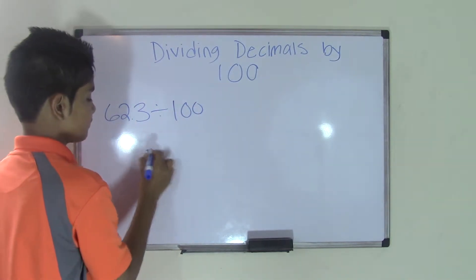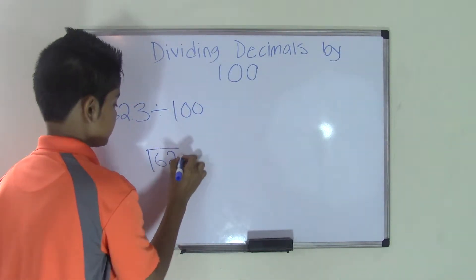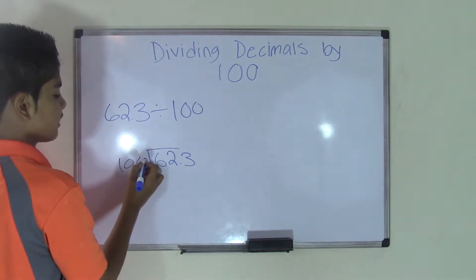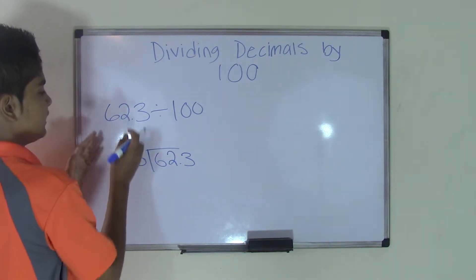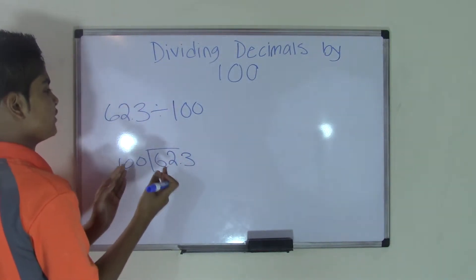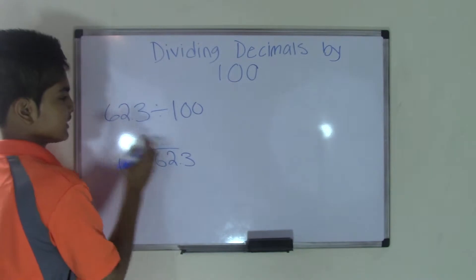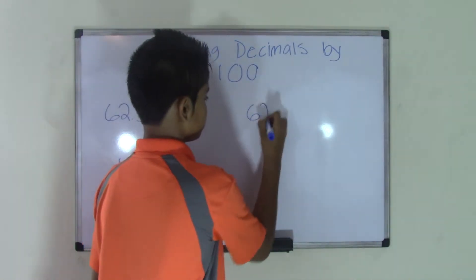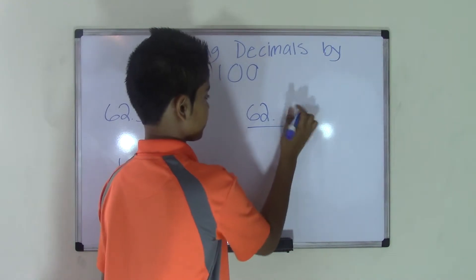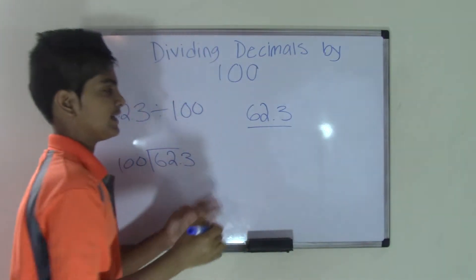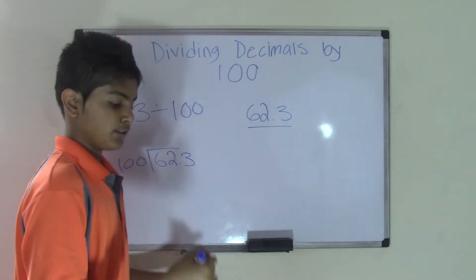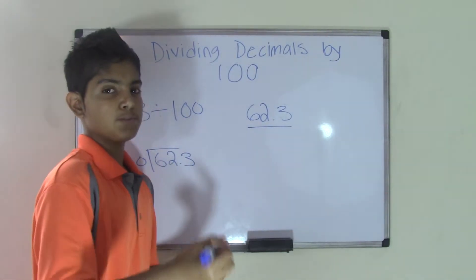Now they could write it in division form, which will look something like this. But these problems are just to confuse you. The real deal is taking the decimal number and making it easier so that you can divide it by 100. So let's say the decimal number is 62.3. You have to identify each number and its place value, and then divide this number and its place value by 100.